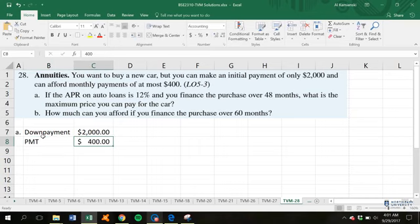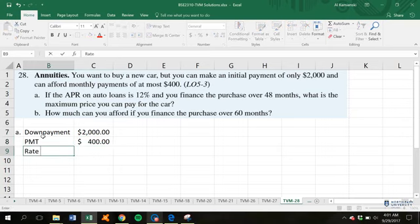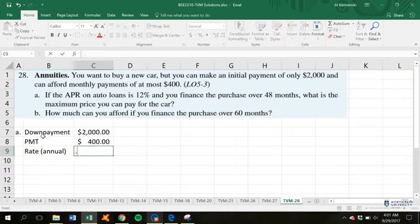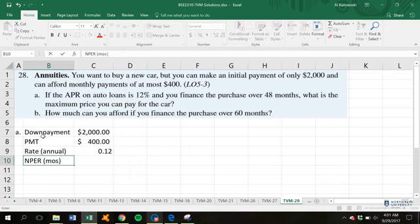If the APR on the loan, so this is our rate, and this is APR, our annual, is 12%, and you can finance the purchase over 48 months, what is the maximum price you can pay for the car?